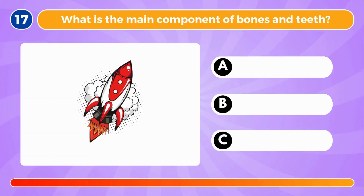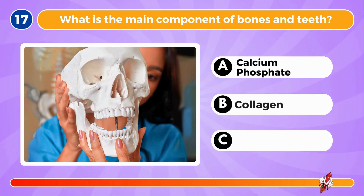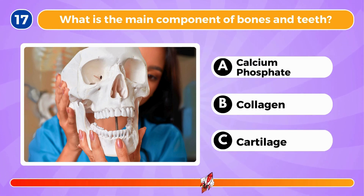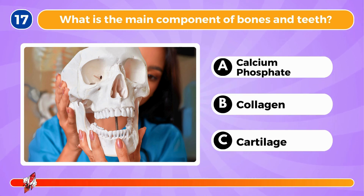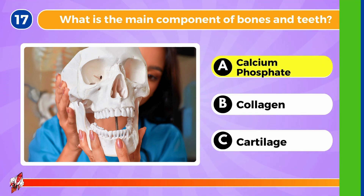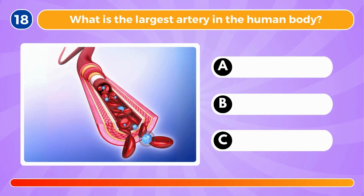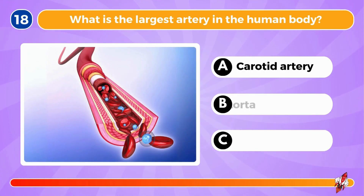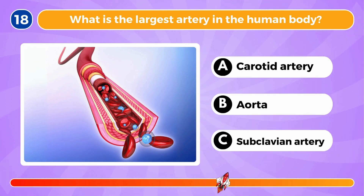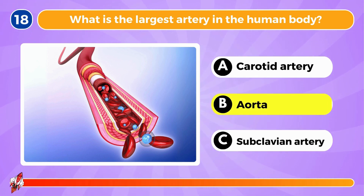What is the main component of bones and teeth? Calcium phosphate is the main component. What is the largest artery in the human body? It's the aorta.